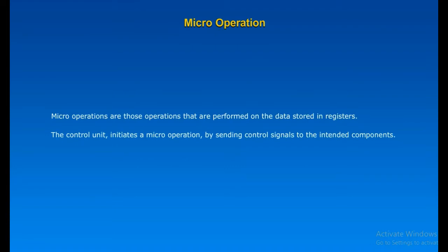Micro-operations are those operations that are performed on the data stored in registers. The control unit initiates a micro-operation by sending control signals to the intended components. After the register-to-register movements happen, we say the micro-operation is executed.